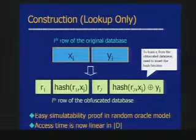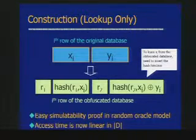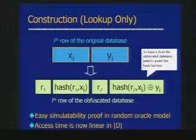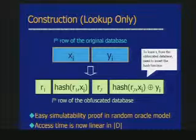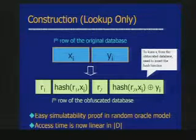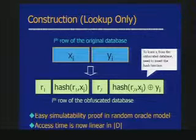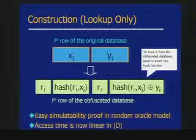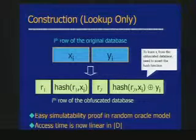This is a simple construction, and it happens to be an obfuscation of a point function — specifically, an obfuscation on equality of X. The only way to access this database is to supply X and then learn Y. If you don't know X, there is no way to learn Y, and no way to learn X either. The only difficulty is that access time becomes linear in the size of the database, because you don't know which row X is in, so you have to try your X on every row.